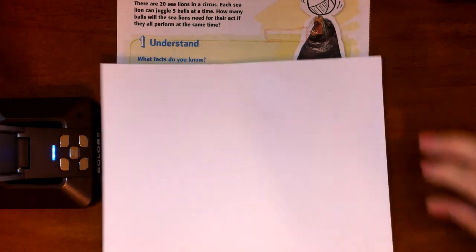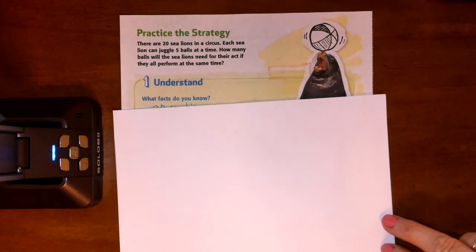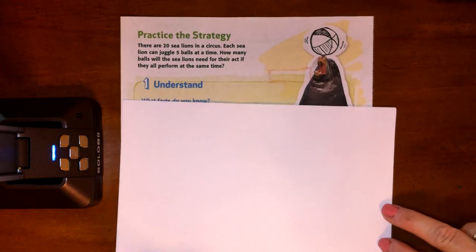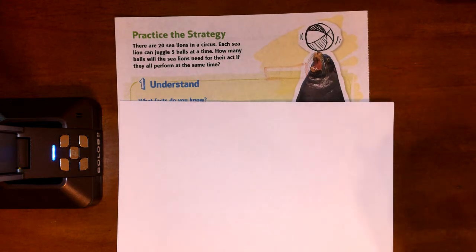Okay. And here's our next story problem. And it is, there are 20 sea lions in a circus and each sea lion can juggle five beach balls at a time. How many beach balls will the sea lions need for their act if they all perform at the same time?